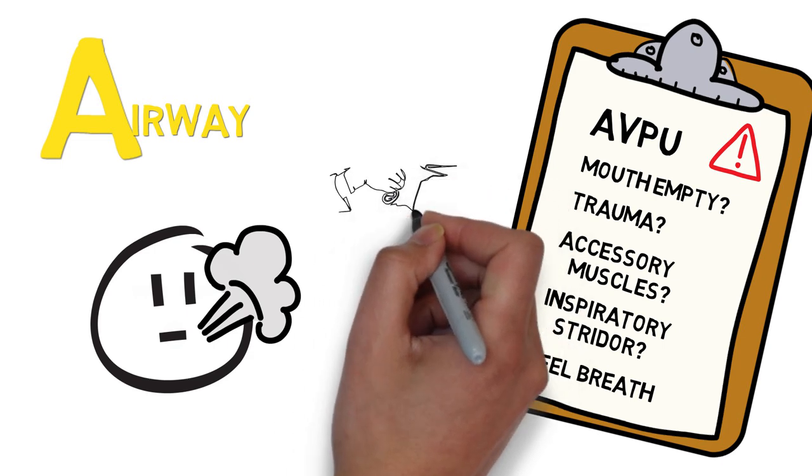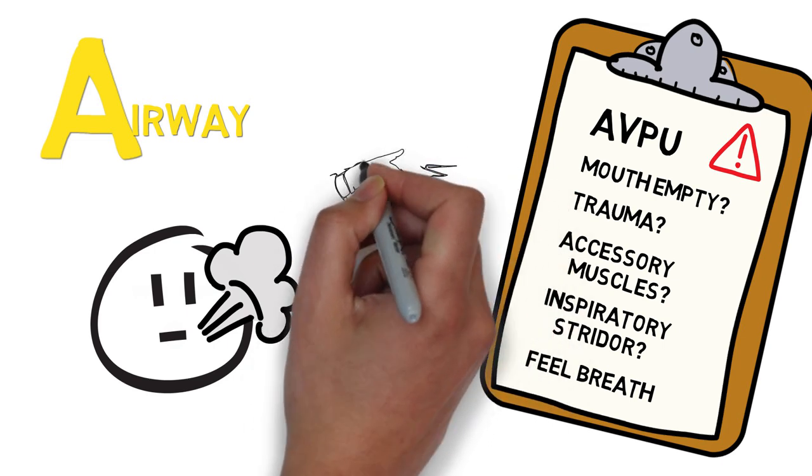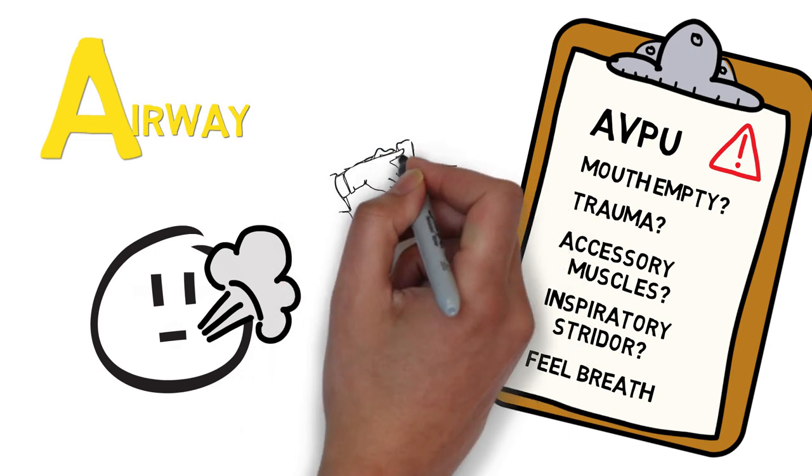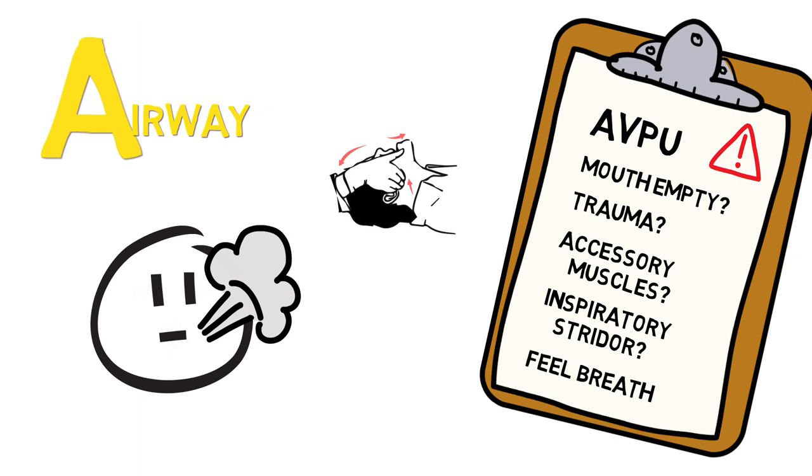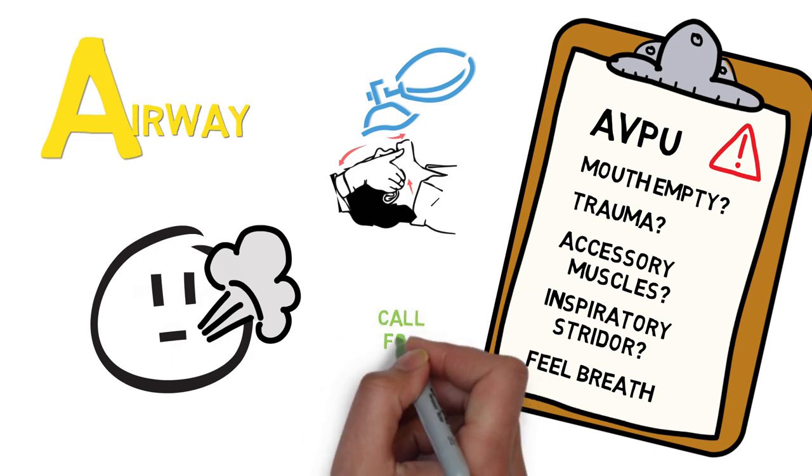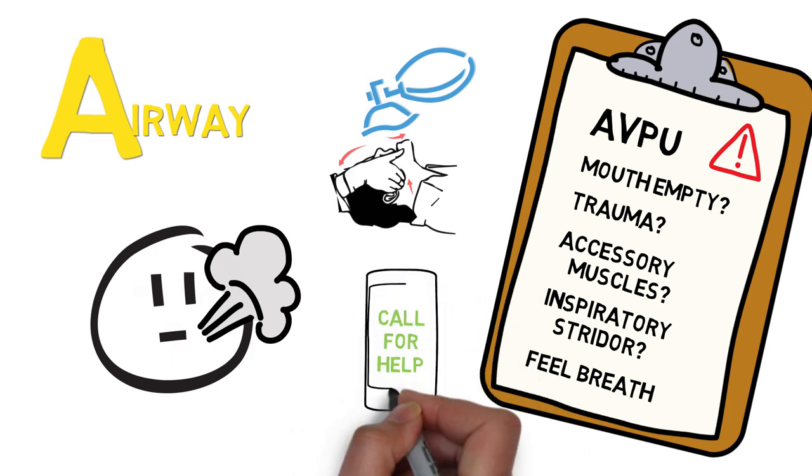So what do you do? If you don't suspect neurological trauma, you start with the triple airway maneuver, which is a combination of the chin lift and the jaw thrust, and you give the patient oxygen. And most importantly, you call for help, like an on-call, anesthesiologist or intensivist.